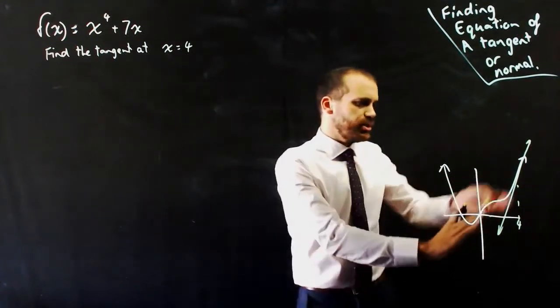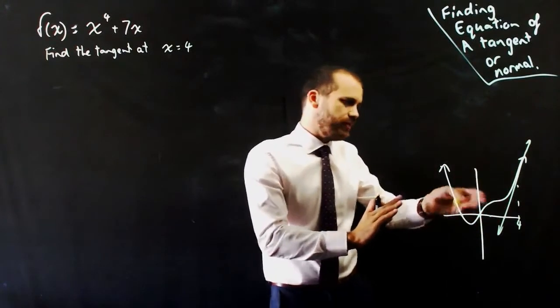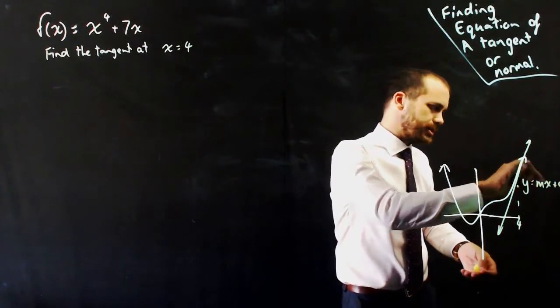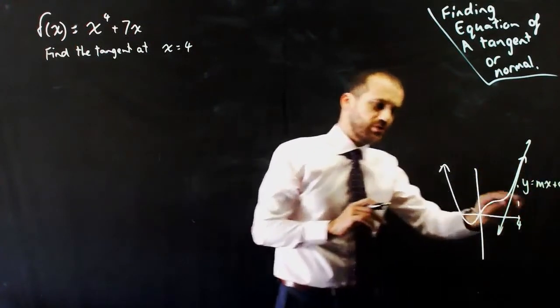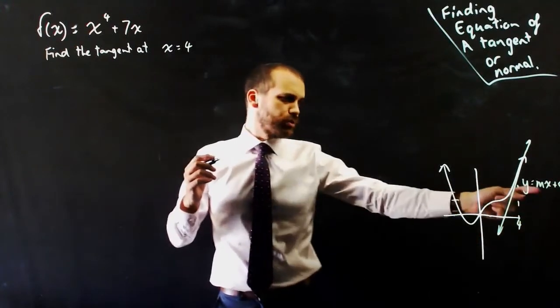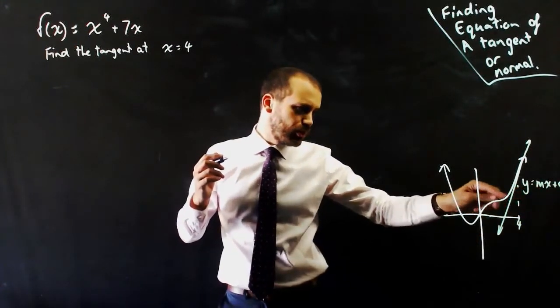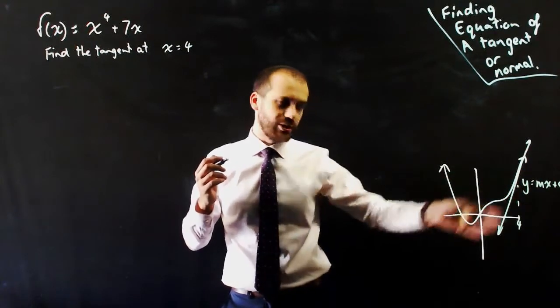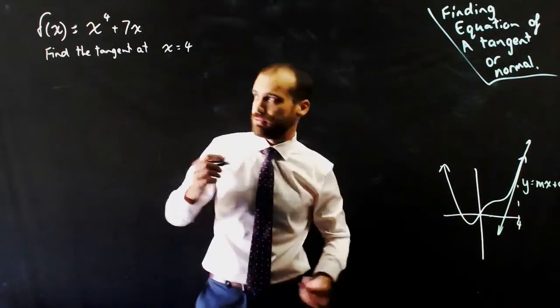So I need to know what the gradient of that line is. Because don't forget, any straight line will be y = mx + c. And if I knew the gradient of the point at which it was touching this graph, I would also know the gradient of the line itself. And to find gradients, we use derivatives.